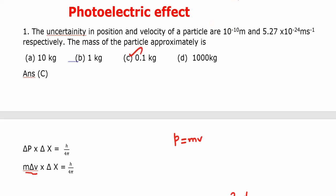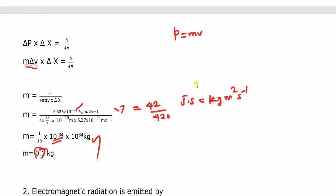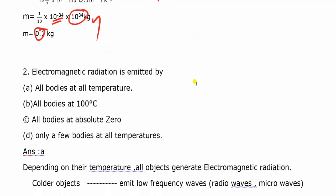Question number 2: Electromagnetic radiation is emitted by — A) all bodies at all temperatures, B) all bodies at 100 degrees Celsius, C) all bodies at absolute zero, D) only a few bodies at all temperatures. Absolute zero is minus 273 degrees Kelvin.